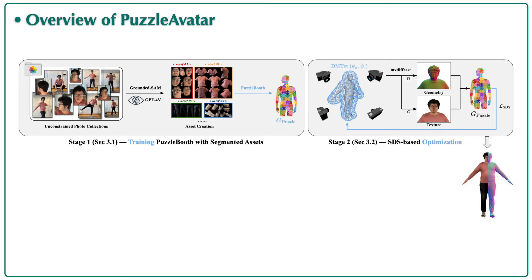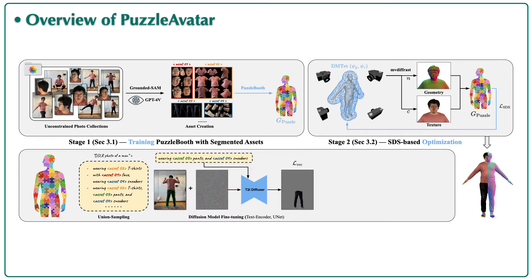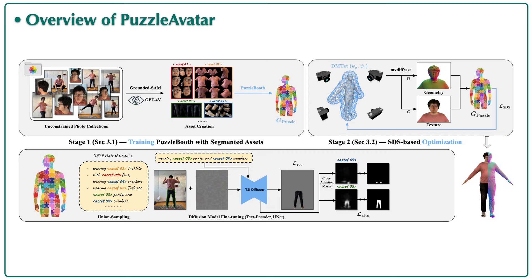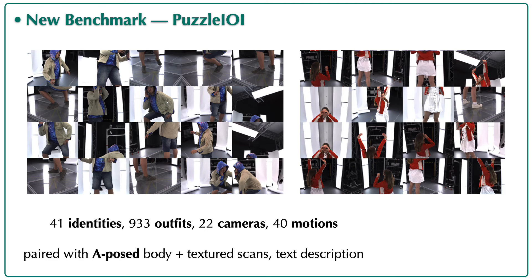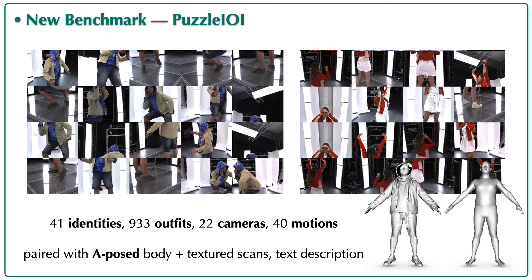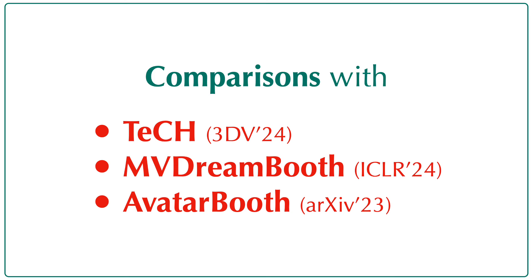The bottom part illustrates the training details of Puzzle Booth — both the text encoder and the UNet are fine-tuned using the masked diffusion loss, cross-attention loss, and prior preservation loss. Components marked in light blue are trainable. We also introduce a new benchmark, Puzzle AOI, which includes 41 subjects in nearly 1K OOTD configurations in challenging partial photos, with paired ground-truth 3D bodies and scans.